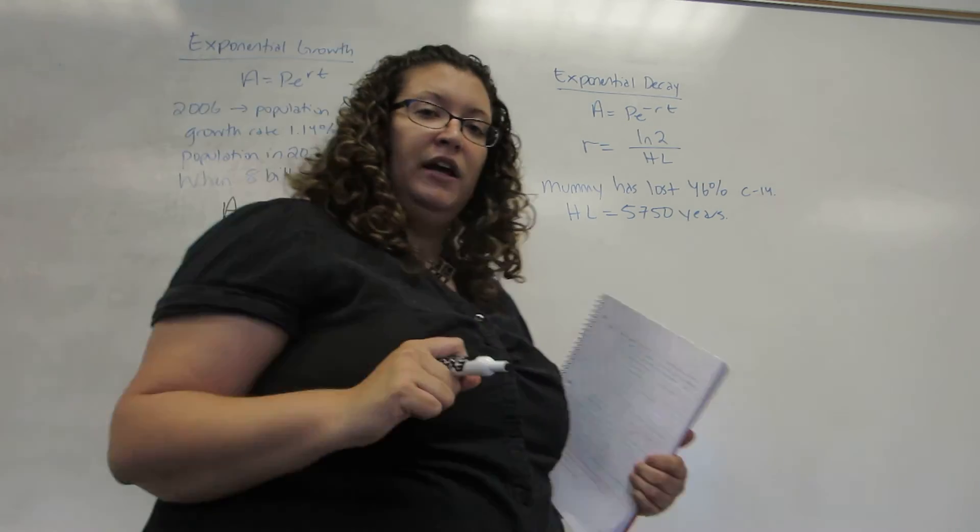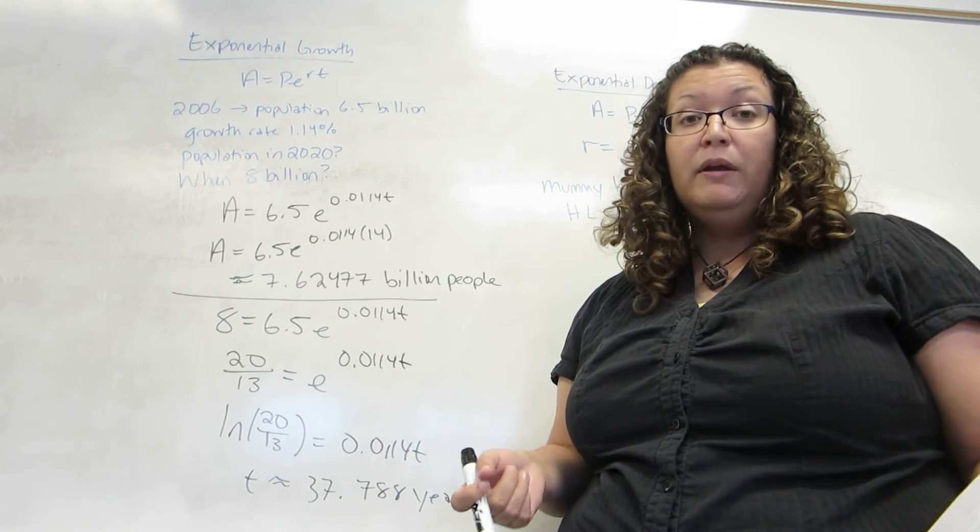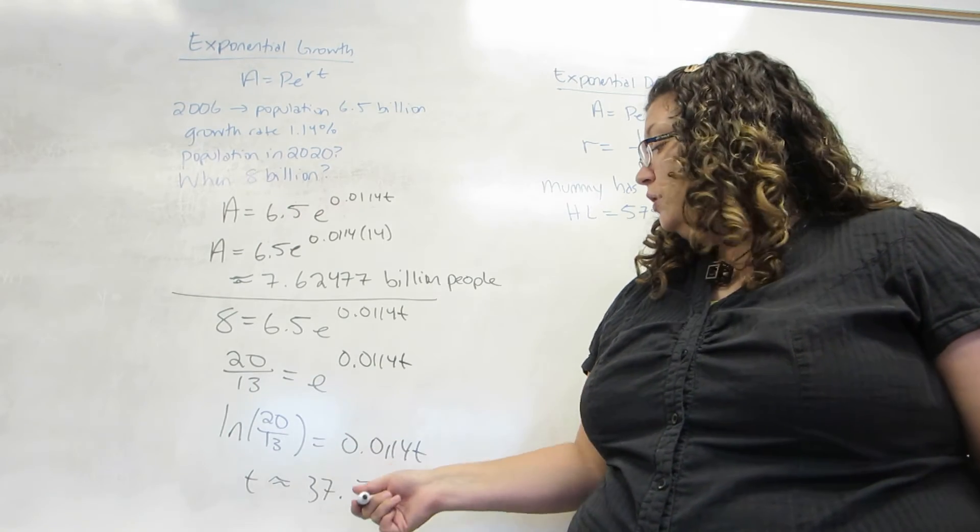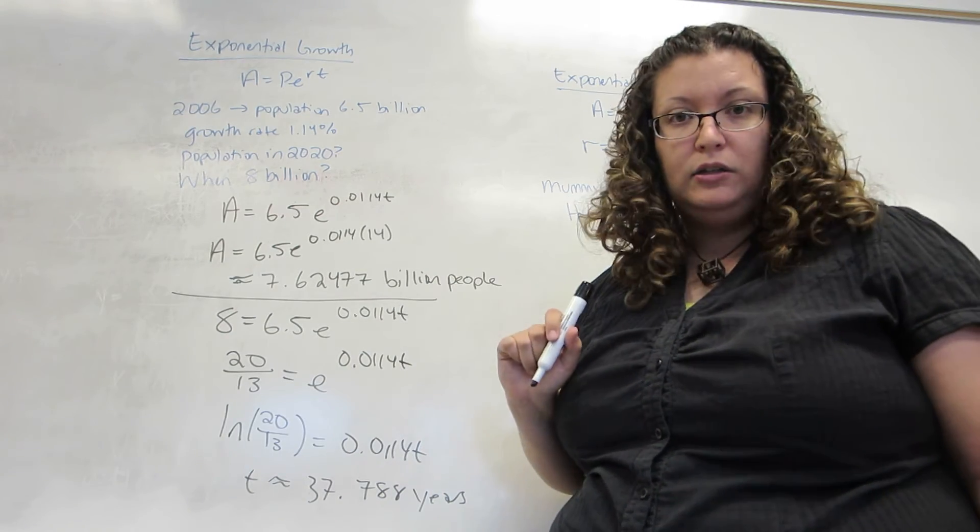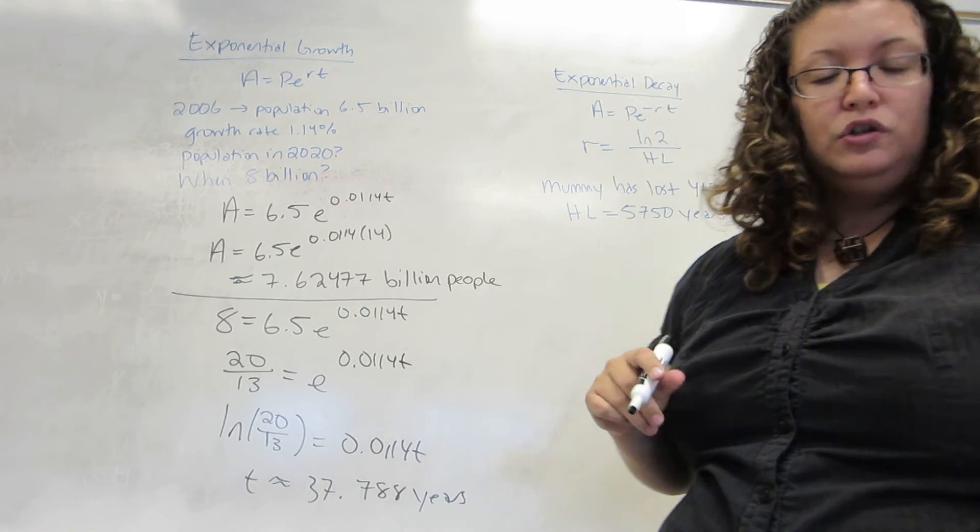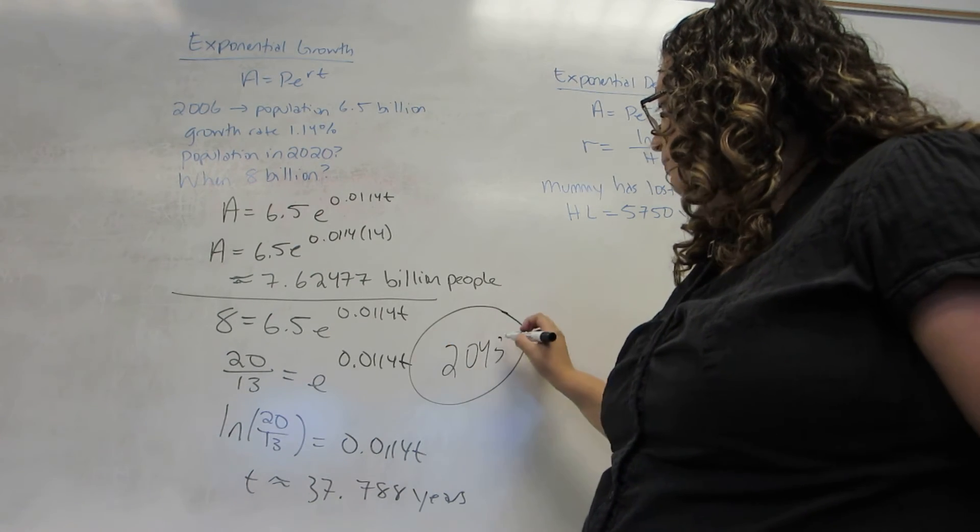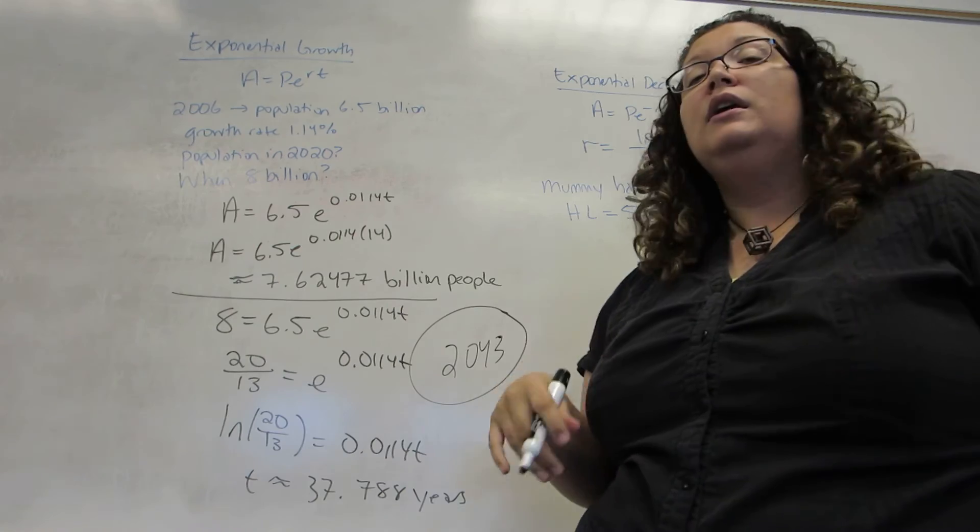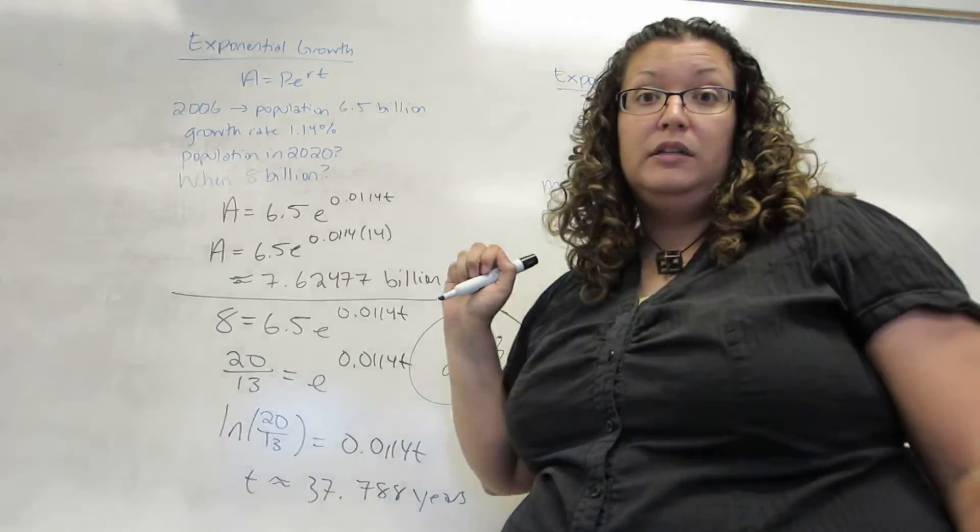Now, the question, however, actually asked, when will the population reach 8 billion? Meaning, what year? So, it is 37.788 years from 2006 when we started counting. So, in this case, the answer to the question will be, we estimate the population will reach 8 billion in the year 2043, which is 37 years from 2006.